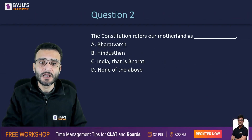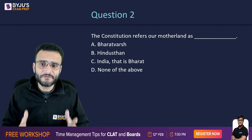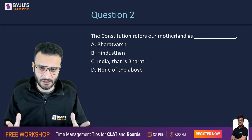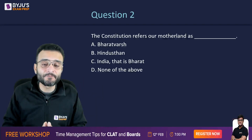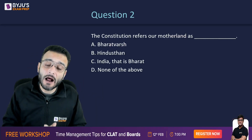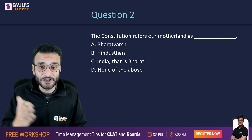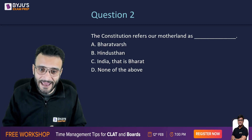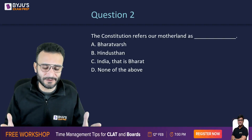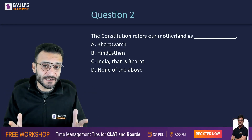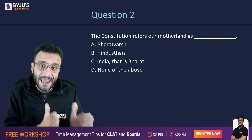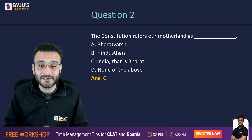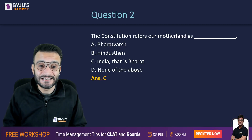Moving on to the next question: the Constitution refers to our motherland as what? What is the other name for India given under the Constitution? Is it Bharat Vash, Hindustan, India that is Bharat, or none of the above? The correct answer is India that is Bharat. The Constitution of India categorically states that India can also be referred to as Bharat. The correct answer is option C.